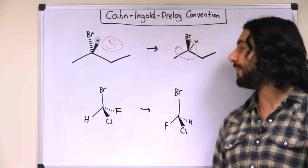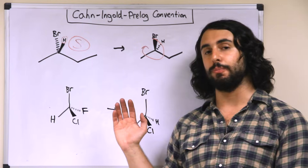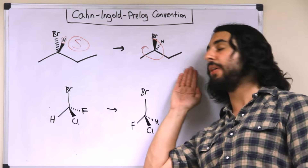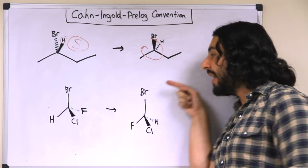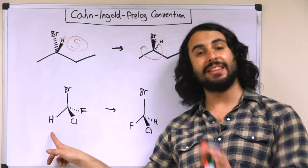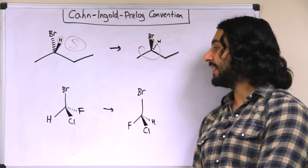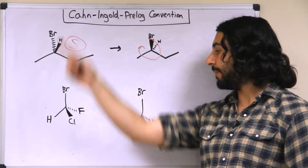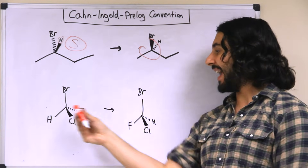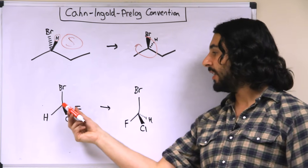Again, if you're very good with spatial reasoning, you can orient yourself to imagine that the lowest priority group is away from you. Imagine sitting in the plane of the board and looking this way — now the hydrogen is away from me.